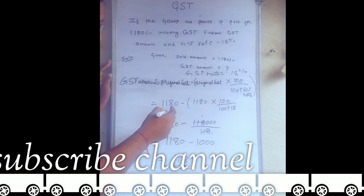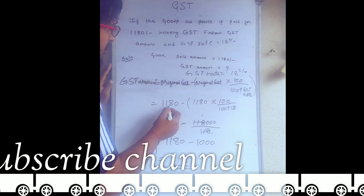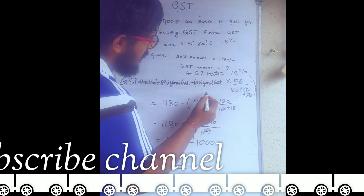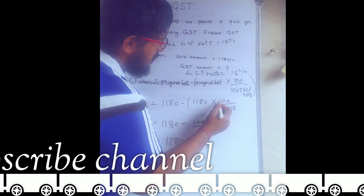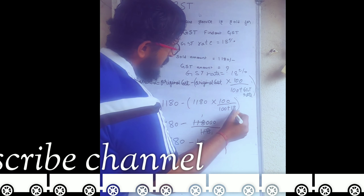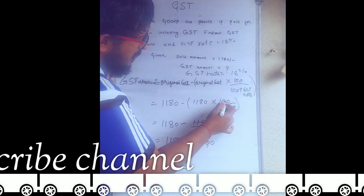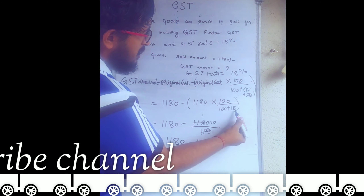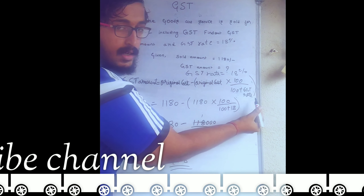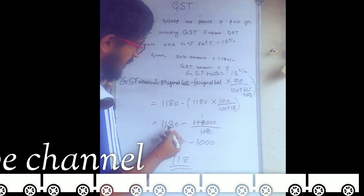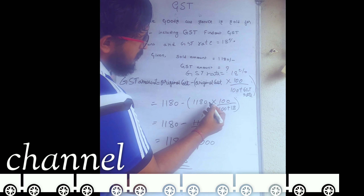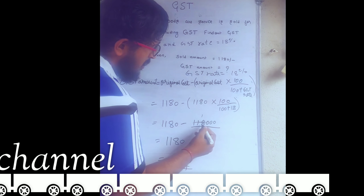We simplify: 1180 minus 1180 into 100 divided by 100 plus 18, where 18% is the GST rate. We take 1180 down and enter it into the formula.